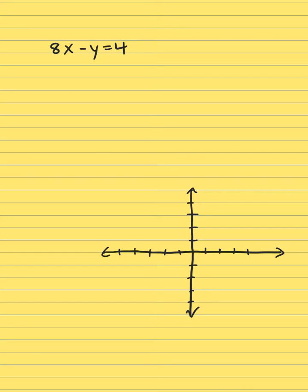To find the slope and y-intercept, you need to put this equation in y equals mx plus b form. So we need to take this equation and solve it for y.